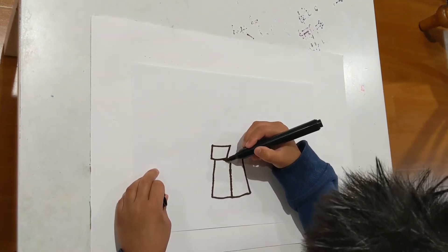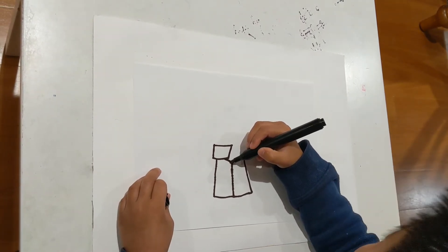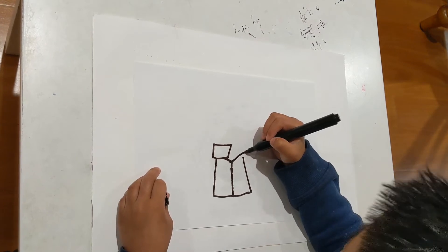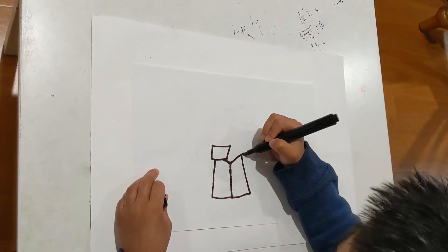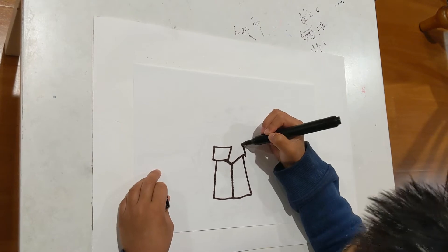Then I'll just do a diagonal line to here. And then from here it'll go up. Like that. Up. And then connect.